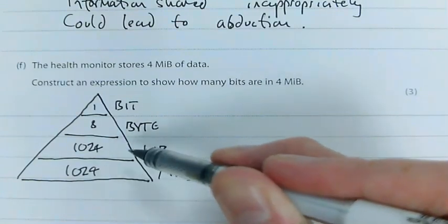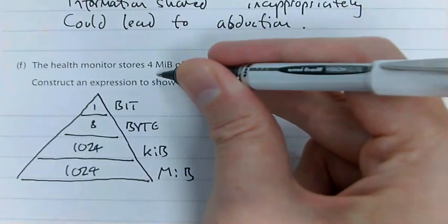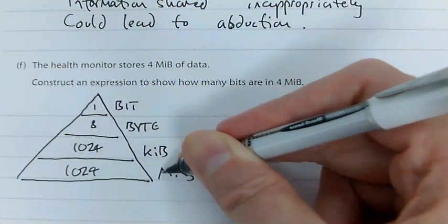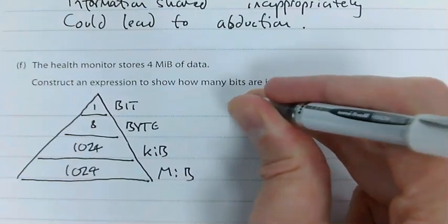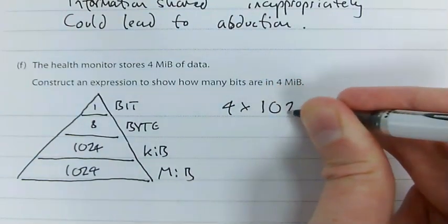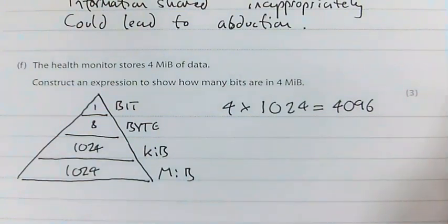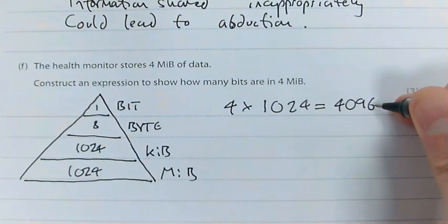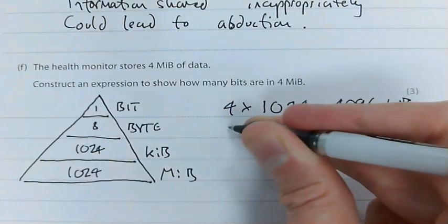I've got four mebibytes of data. Construct an expression to show how many bits there are in four mebibytes. I've got to work this out. In four mebibytes, I've got 4 times 1024, which equals 4096. You're going to have to do this without a calculator. I've now got 4096 kibibytes. That would give me one mark.